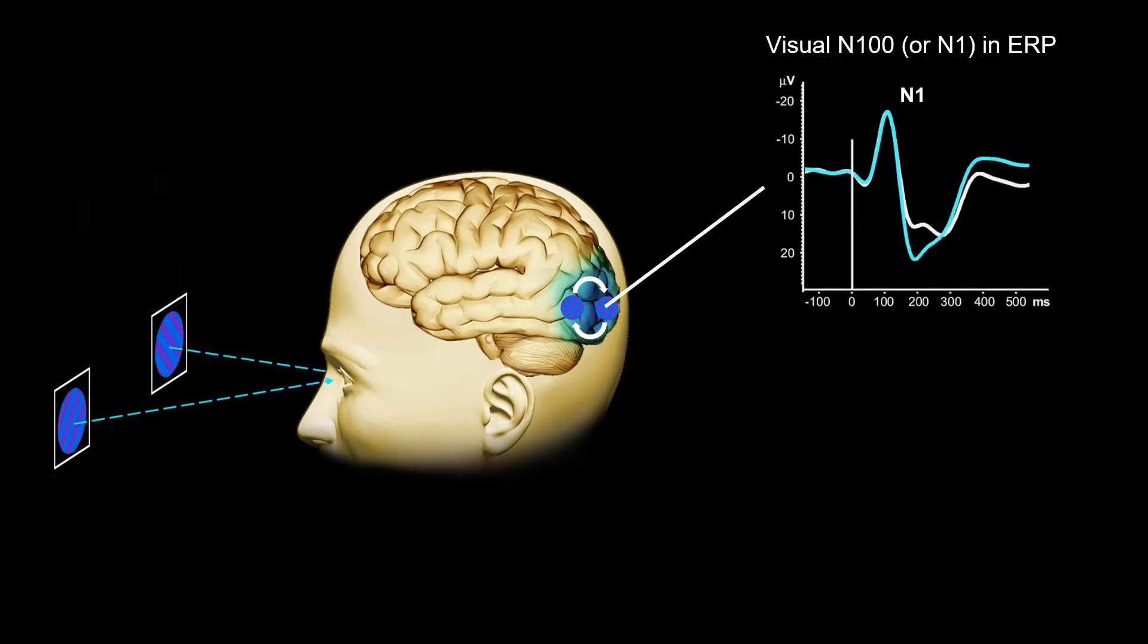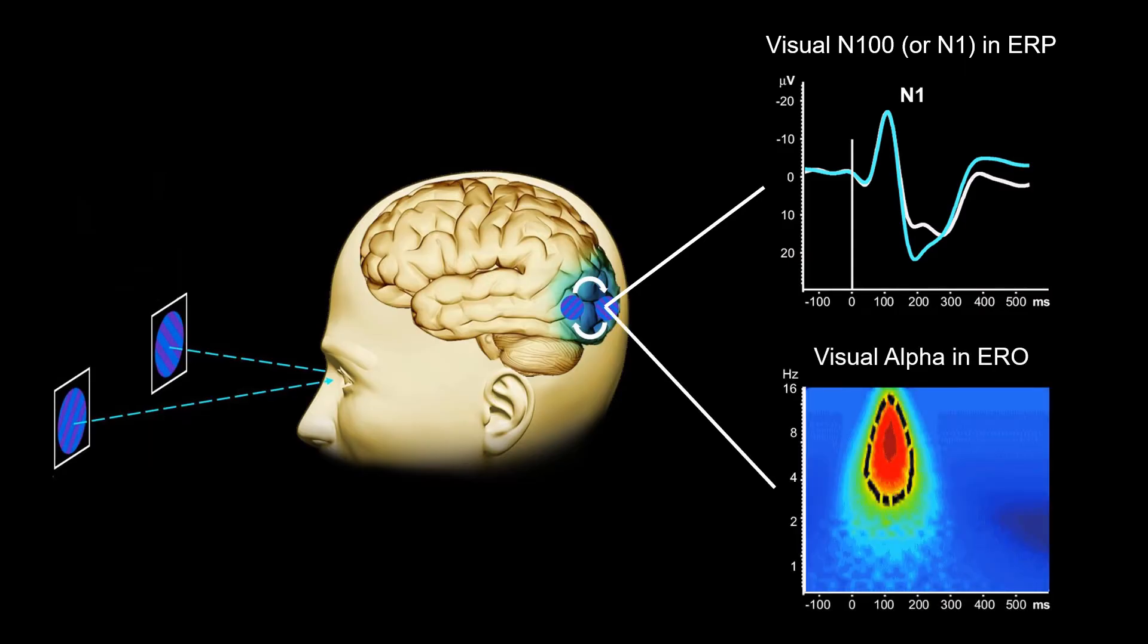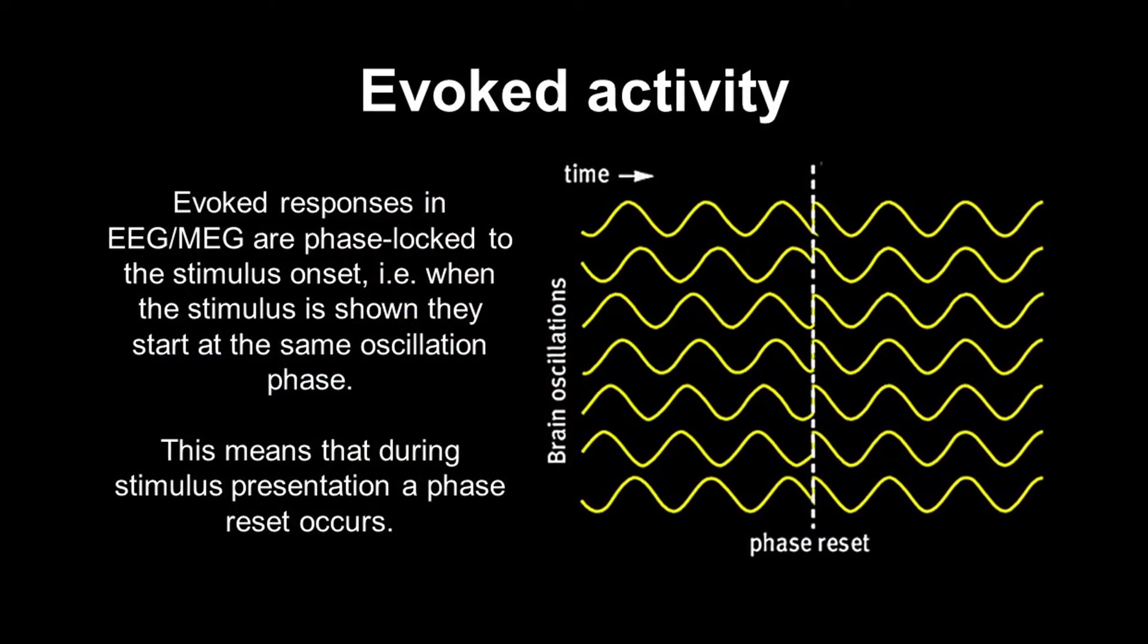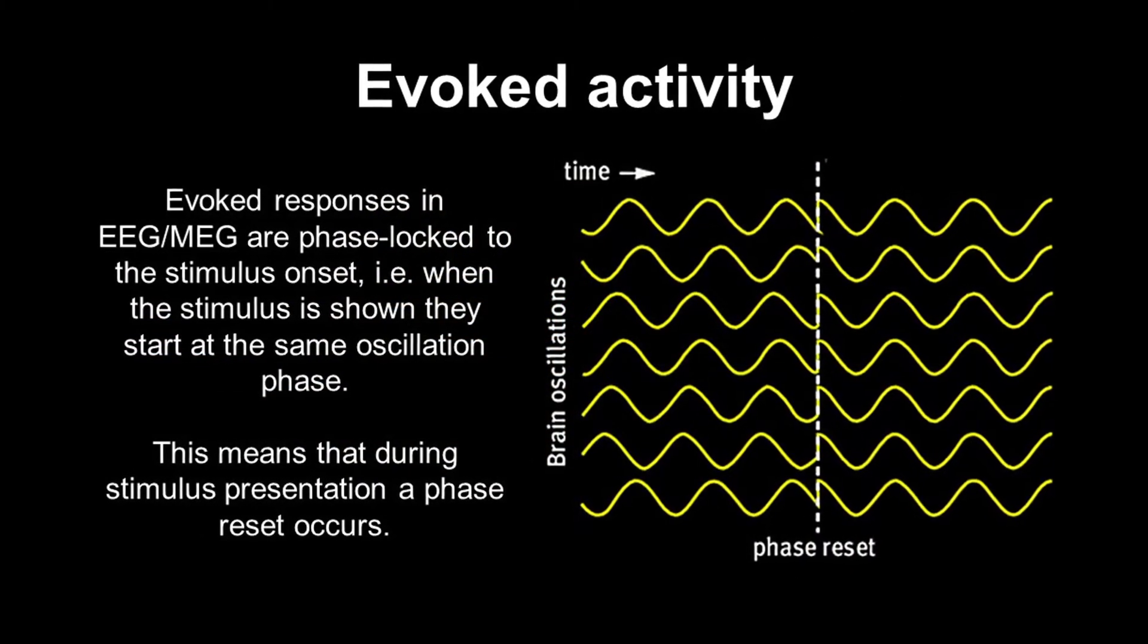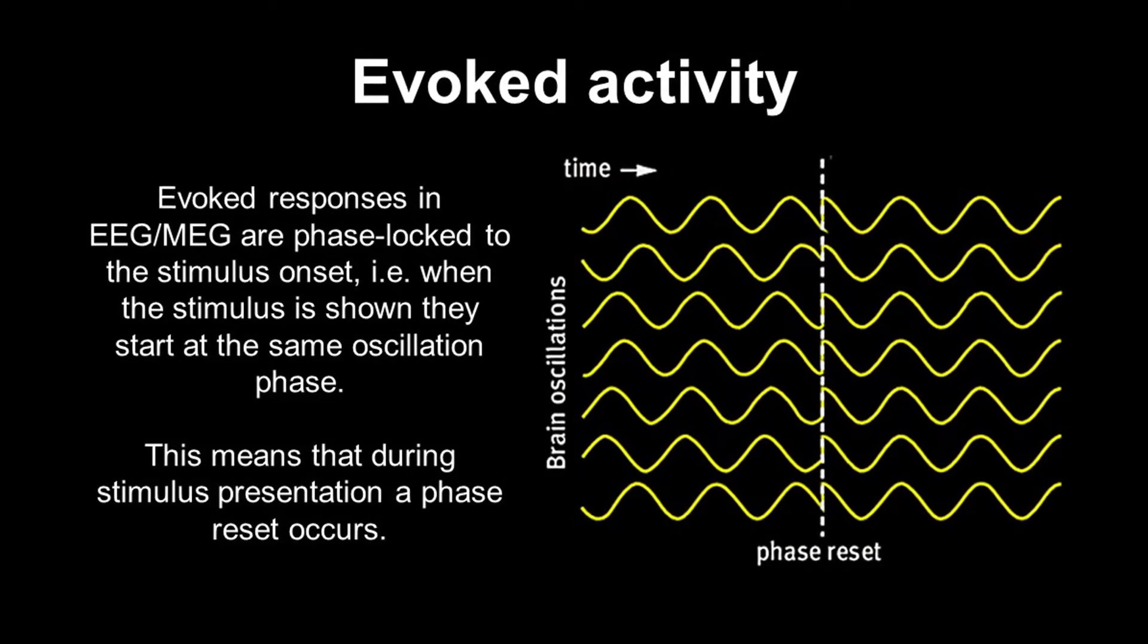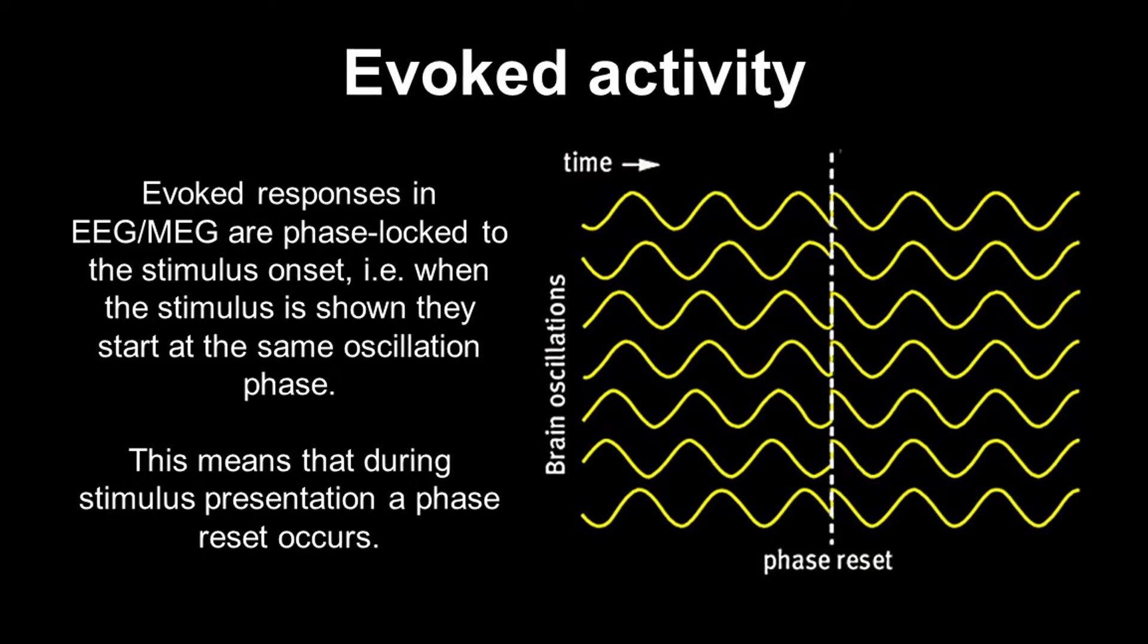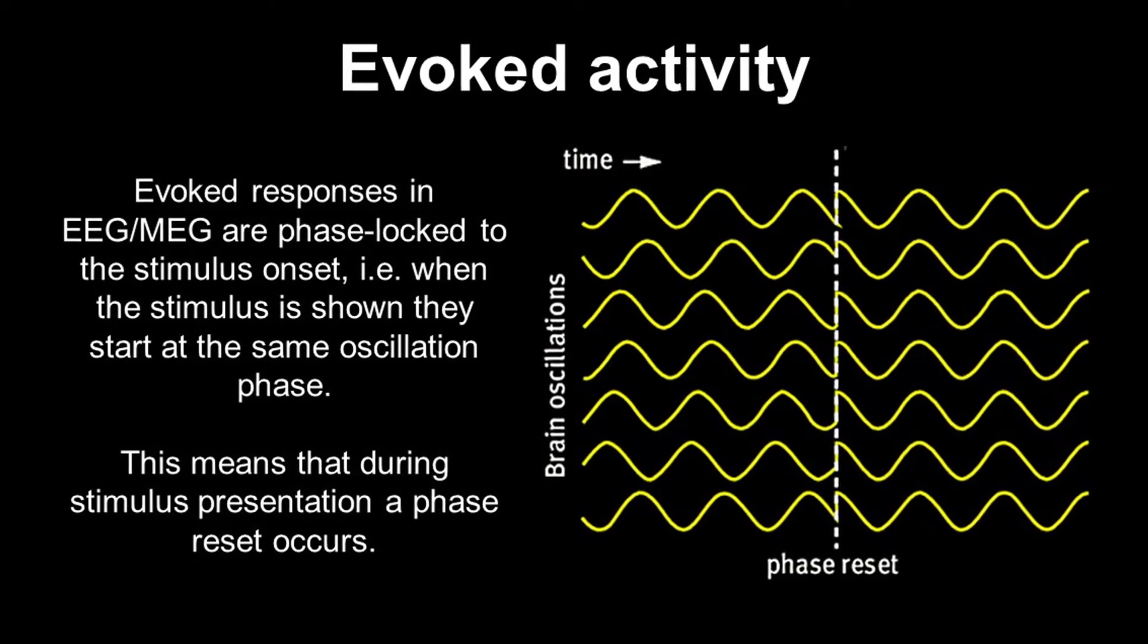At the same time, we also see an increase in the alpha activity in the event-related oscillations. Both responses reflect activity in the early visual cortex. In this case, we talk about a so-called evoked response, which means that the visual stimulus resets the brain oscillations. So it doesn't really matter what happened before the stimulus, the ERPs and EROs will look similar in each trial and both reflect the same process.